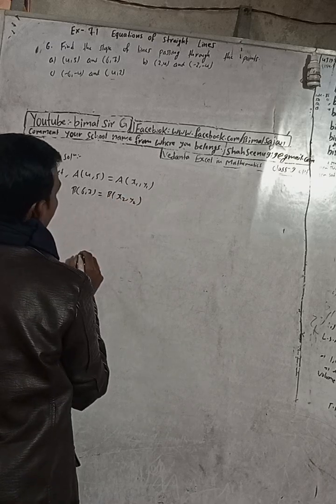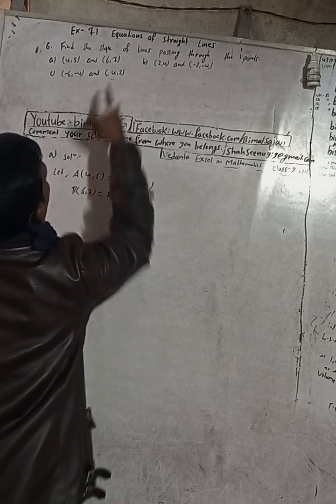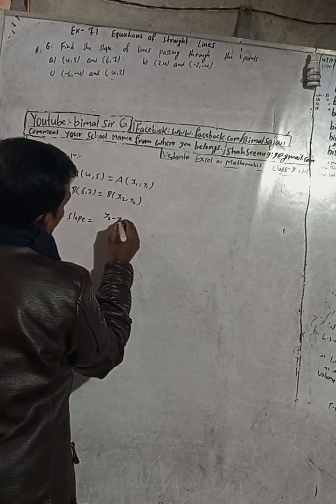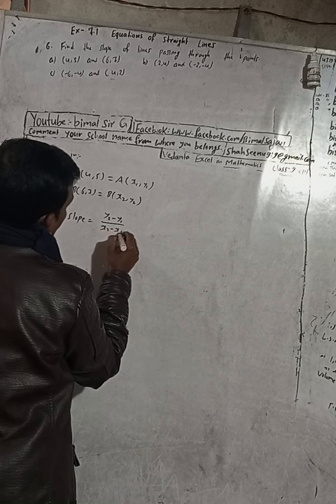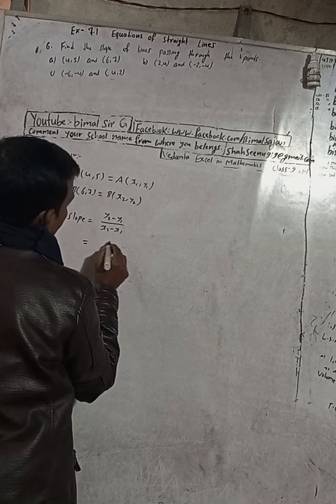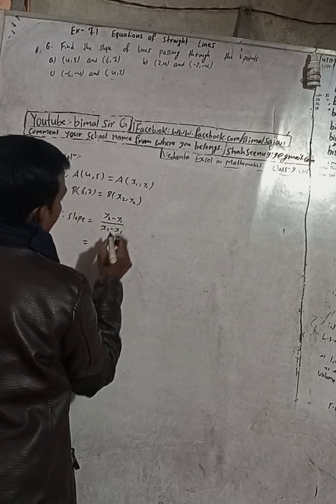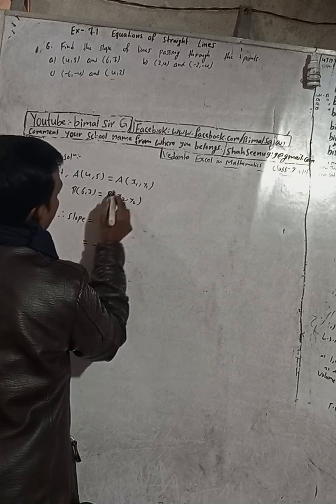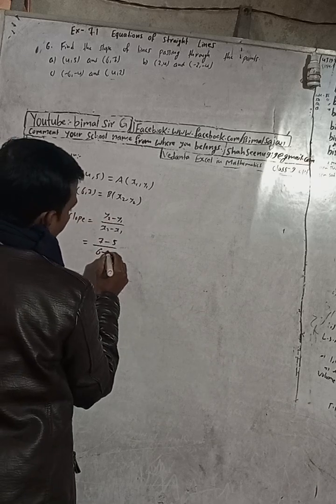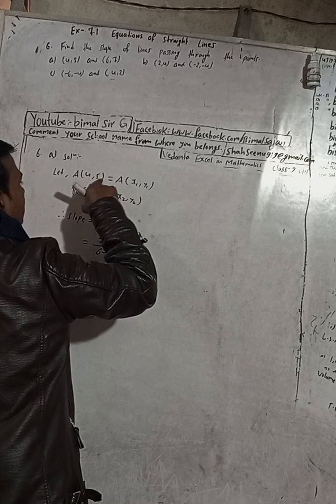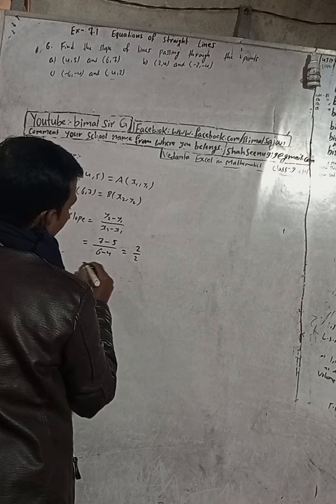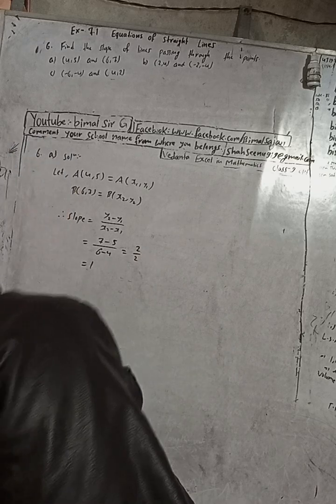Now the formula to find slope. Therefore, the slope formula is (y2 - y1) / (x2 - x1). What is y2? This is 7. So y2 is 7 minus y1, which is 5. And x2 is 6 minus x1 which is 4. From here, (7 - 5) / (6 - 4) equals 2/2, which equals 1. The slope is equal to 1, which matches the answer in the book.